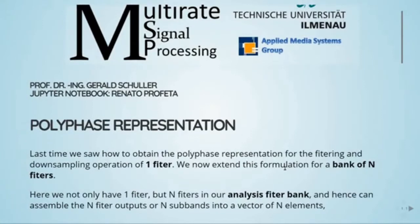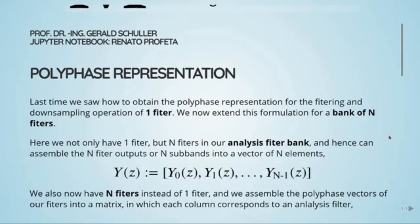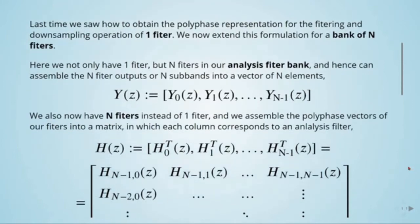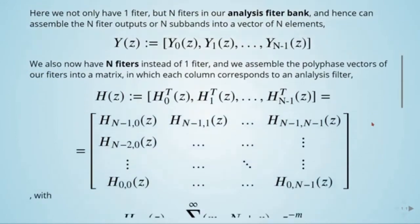Last time we saw how to obtain the polyphase representation for the filtering and downsampling operation of one filter. We now extend this formulation for a bank of N filters. Here we not only have one filter but N filters in our analysis filter bank. Hence we can assemble the N filter outputs, or N sub-bands, into a vector of N elements. We also now have N filters, and we assemble the polyphase vectors of our filters into a matrix in which each column corresponds to an analysis filter.